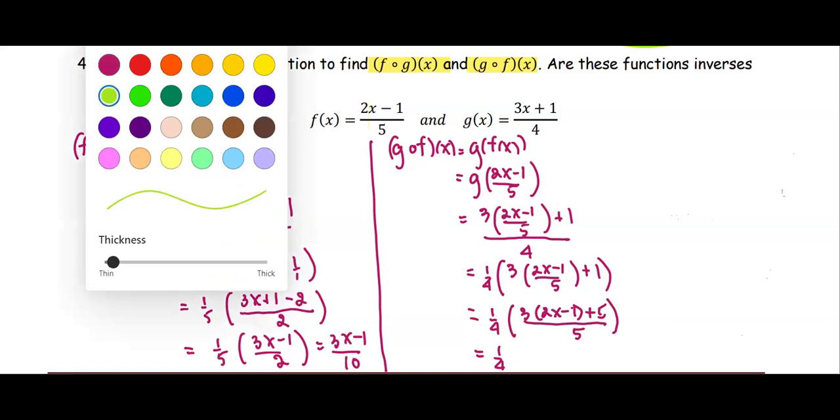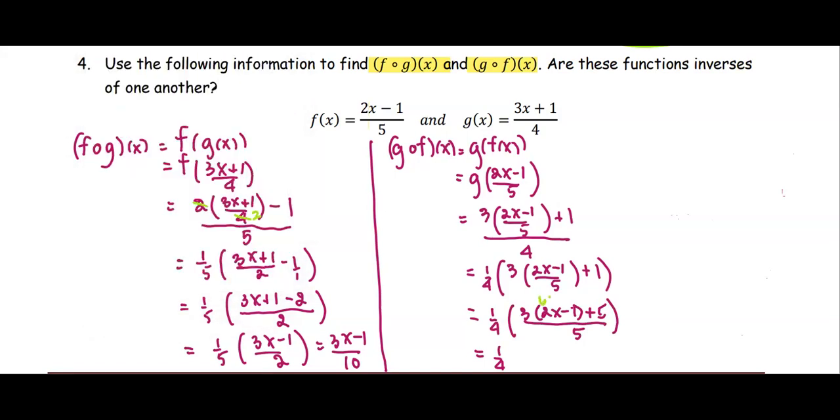I'm going to write in different colors. This is 6x minus 3 plus 5. Negative 3 plus 5 is plus 2. In the parentheses we obtain 6x plus 2, all divided by 5. Factor the 2 out, becomes 2 over 4 times 3x plus 1 divided by 5. Simplify a little more to be 1 over 2 times 3x plus 1 divided by 5.